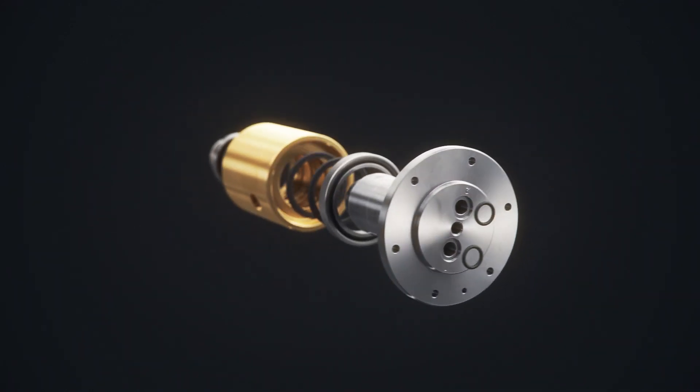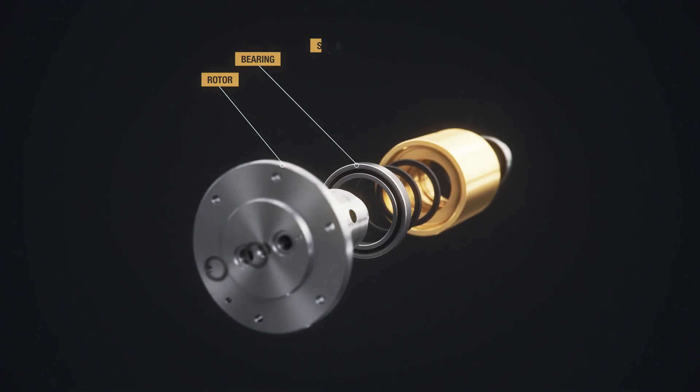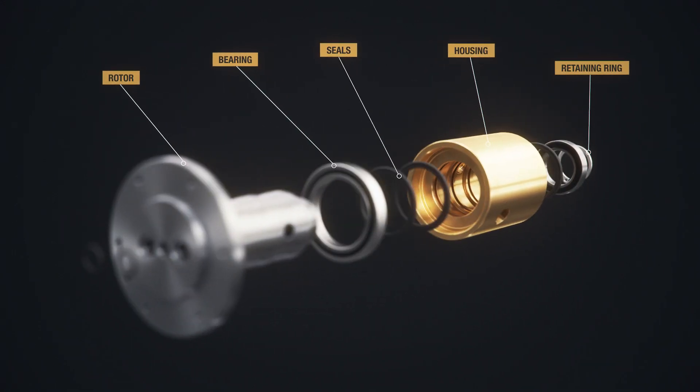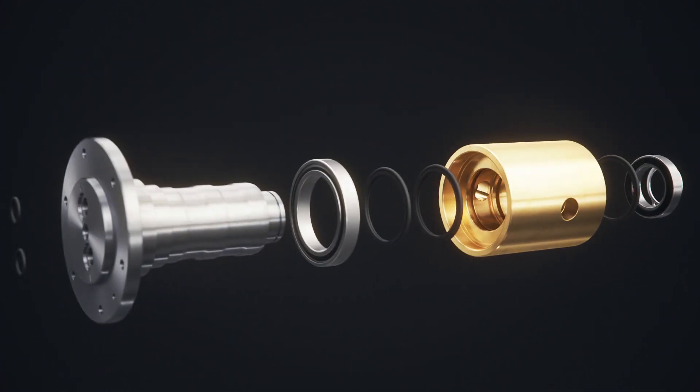The basic multipass rotary union consists of a rotor, bearing, seals, housing and retaining ring. Together, these components create independently sealed passages for media flow.